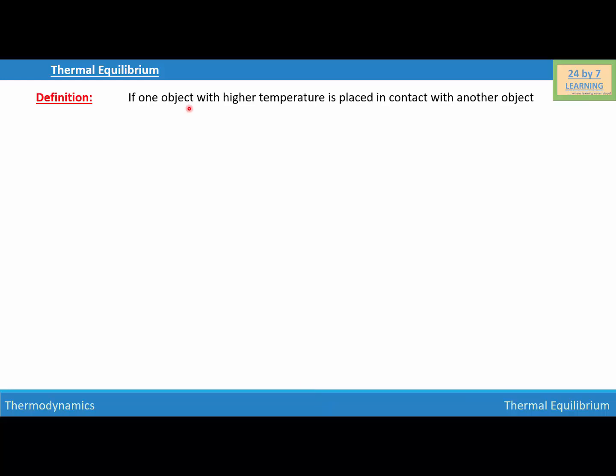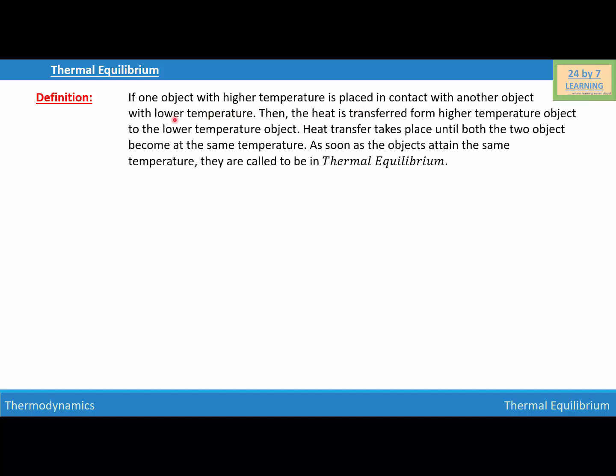Thermal equilibrium. If one object with higher temperature is placed in contact with another object with lower temperature, then heat is transferred from the higher temperature object to the lower temperature object. Heat transfer takes place until both objects become the same temperature. As soon as the objects attain the same temperature, they are said to be in thermal equilibrium.